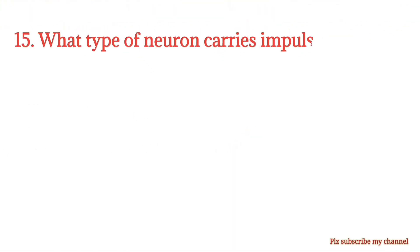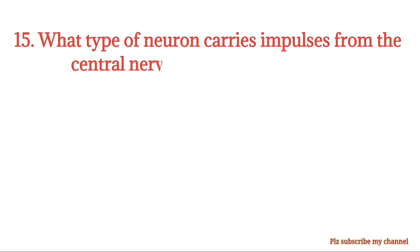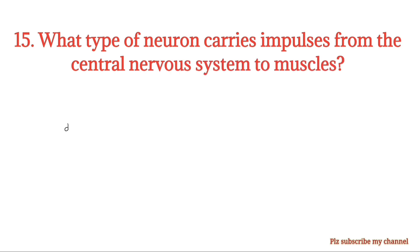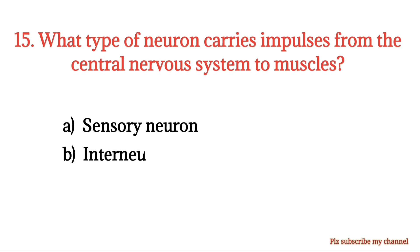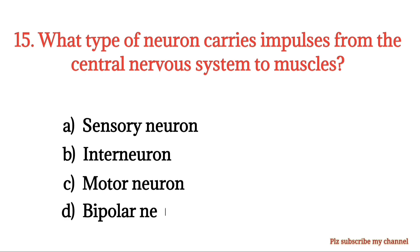MCQ number 15. What type of neuron carries impulses from the central nervous system to muscles? Option A: Sensory neuron. Option B: Interneuron. Option C: Motor neuron. Option D: Bipolar neuron. The right option is Option C.